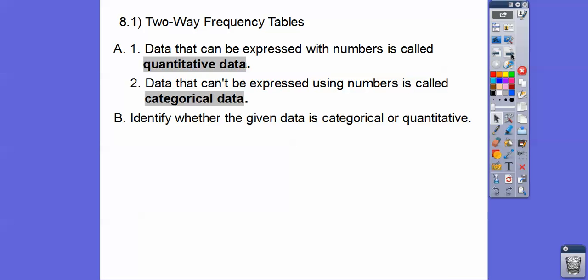So for example, identify whether the given data is categorical or quantitative. Temperature. So say we did the temperature of seven days the last week. Can we average those temperatures? That would be yes. So that would be quantitative.